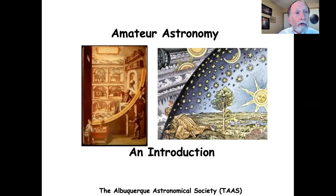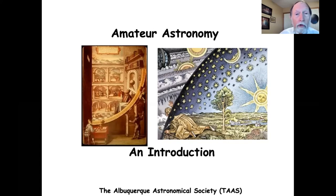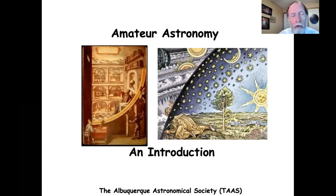Astronomy is a natural science that studies celestial objects and phenomena in order to explain the origin, evolution, and phenomena of such things as planets, moons, stars, nebulae, galaxies, and comets. Generally, astronomy studies everything that originates outside Earth's atmosphere.